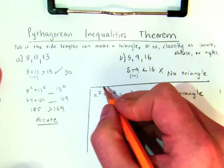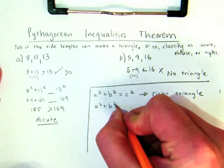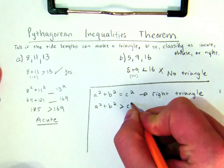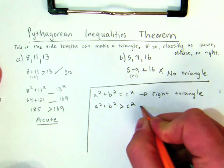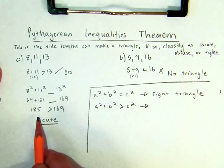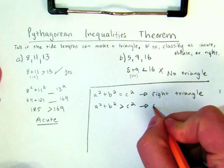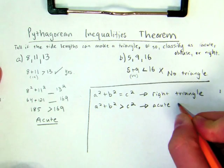If a squared plus b squared is greater than c squared, that means I'm looking at, as I saw here, I'm looking at an acute triangle.